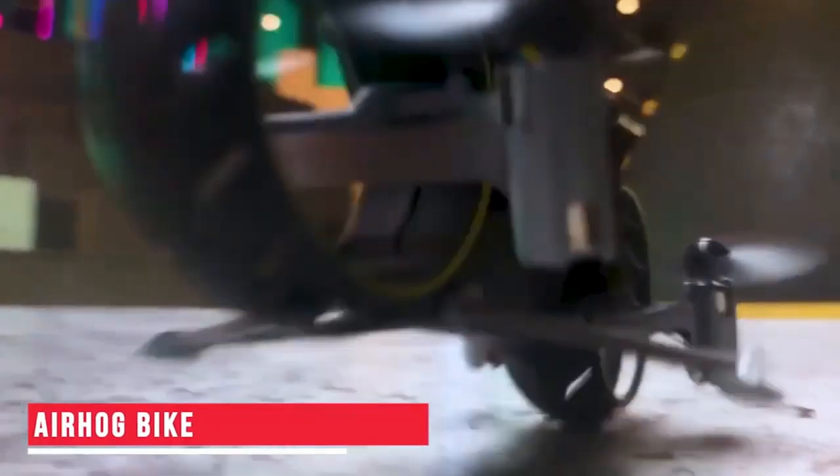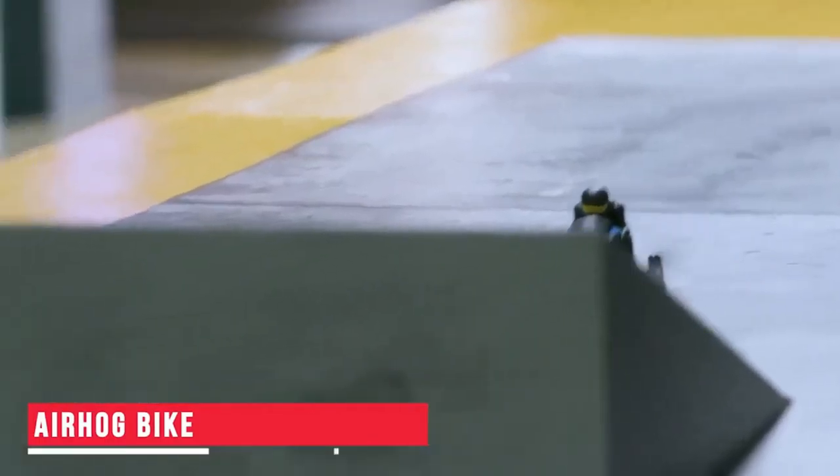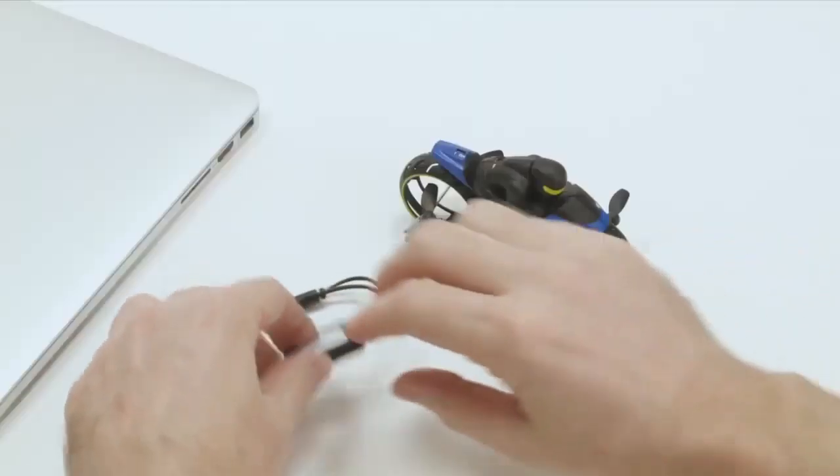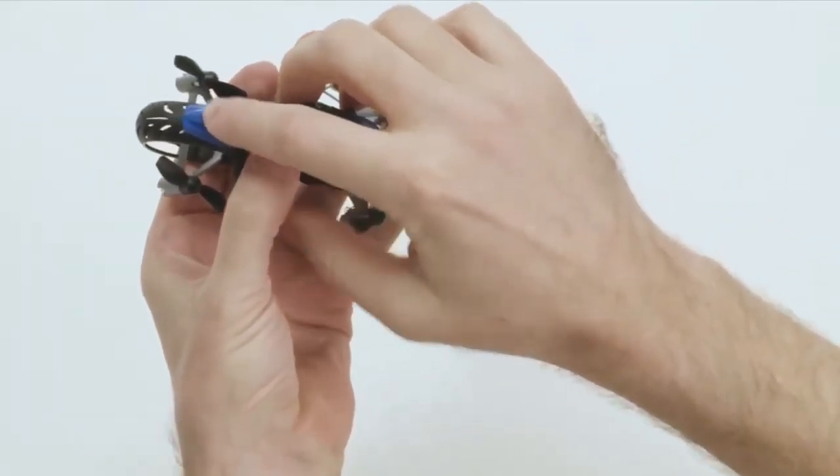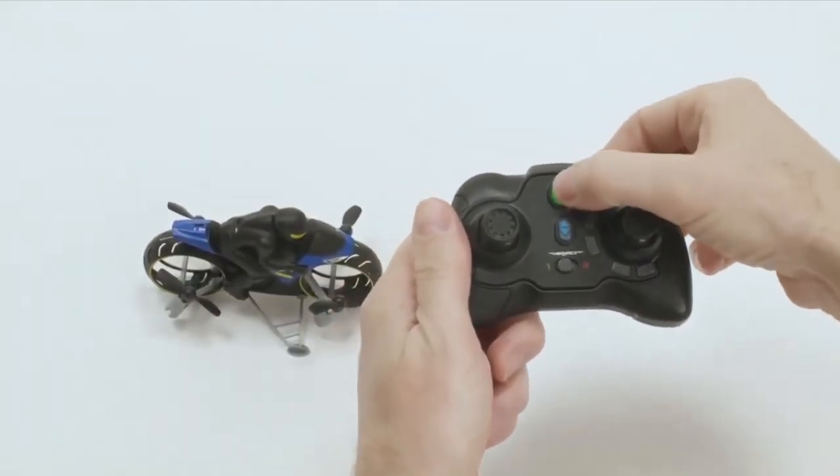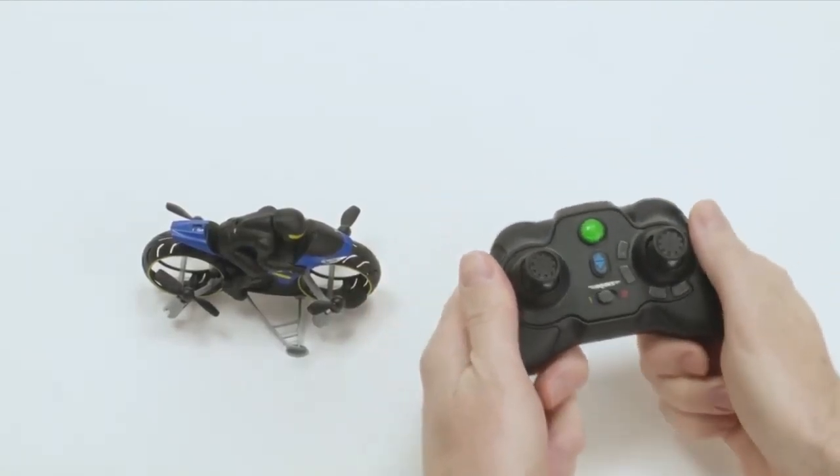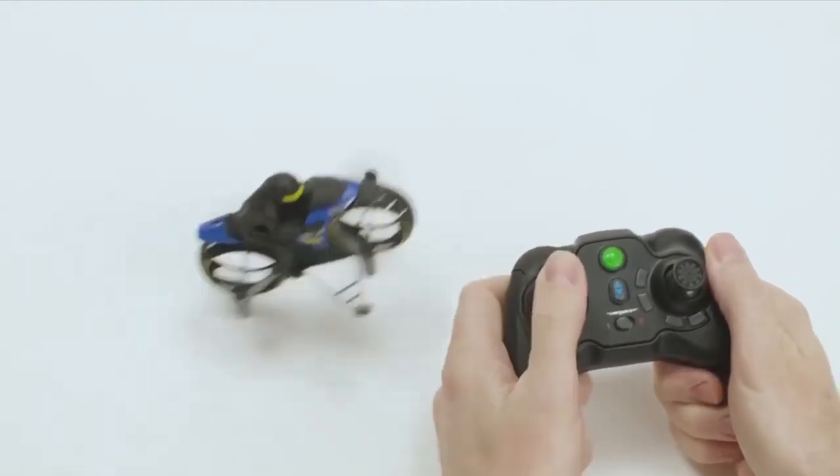Air Hog Bike. This is a bike toy that not just runs on the ground but also flies in the air. First and foremost, this is a chargeable toy. The charging cable comes along with the gadget so that's not an issue. Once fully charged, connect it to its remote controller. As soon as the bike has been connected, its headlights will be turned on and the device will be ready to take off.